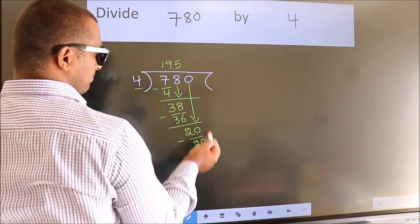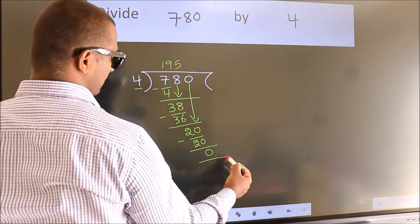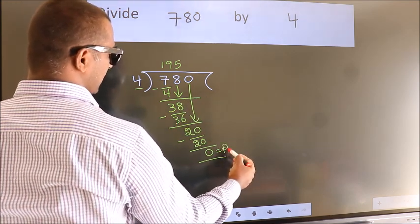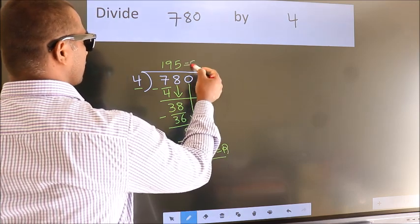No more numbers to bring down. So we stop here. This is our remainder. This is our quotient.